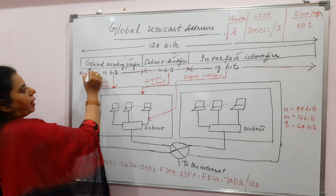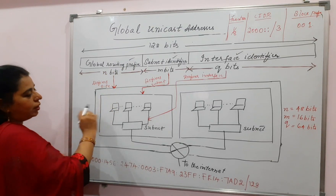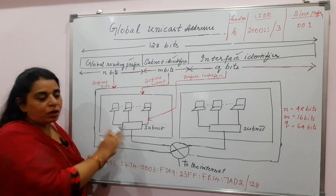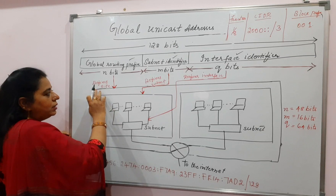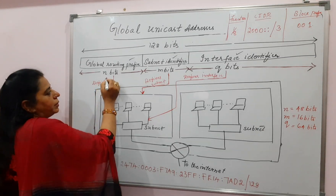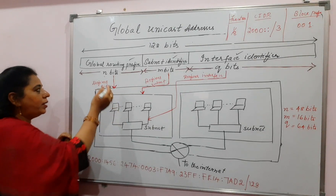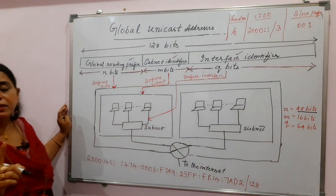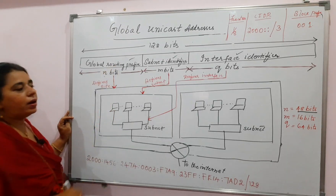The first part — global routing prefix — is denoting the site. The site here is this complete network consisting of different subnetworks, so the larger network is called the site. It is represented with N bits. N is 48 bits — 48 bits are used to represent the site, and we call it the global routing prefix.